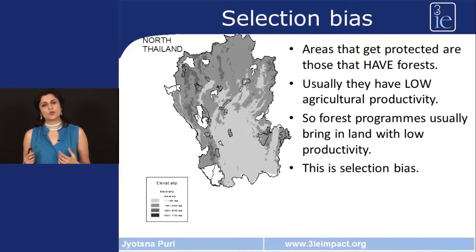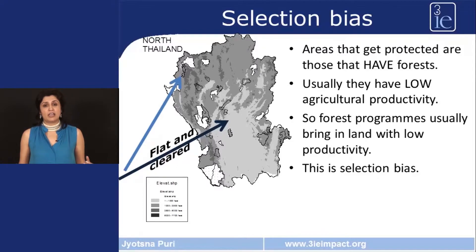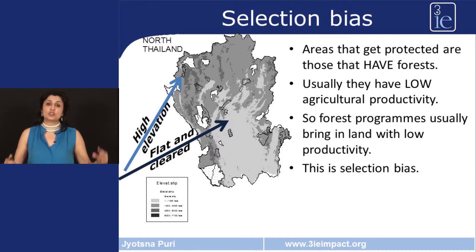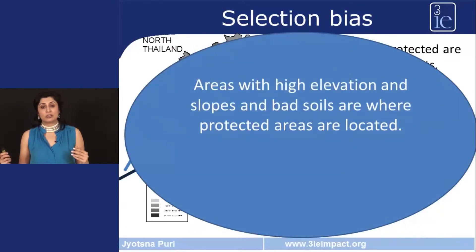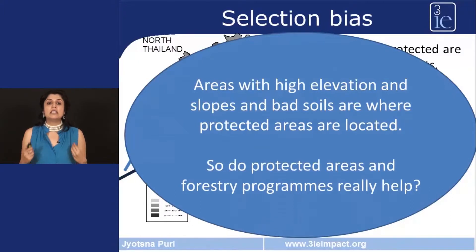Let's see this with the example of Northern Thailand. This is an elevation map of Northern Thailand. The light grey areas show areas which are low elevation, and the dark grey areas show areas with high elevation and therefore remote. Most protected areas — shown as the white cut-out areas on this map — are located in high elevation areas. The big problem is that these high elevation areas, with slopes and bad soils affecting agricultural productivity, are where protected areas are mostly located. Given this, can we really conclude that protected areas help in preventing deforestation?